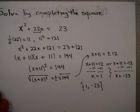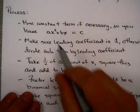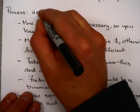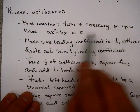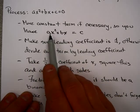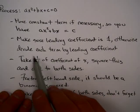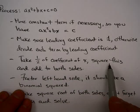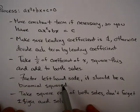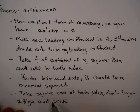That's an interesting way to solve a quadratic equation using completing the square — it will always work. Here's a review of the process: move the constant term so you have ax squared plus bx equals c; make sure the leading coefficient is 1, otherwise divide each term by it; take half the coefficient of x, square it, and add to both sides; factor the left-hand side — it should be a binomial squared; take the square root of both sides, don't forget plus or minus; and solve.